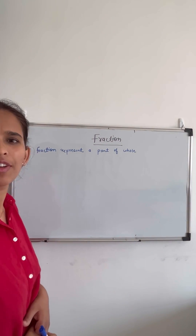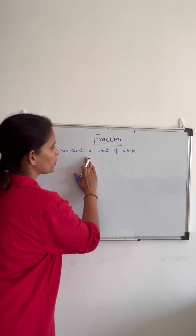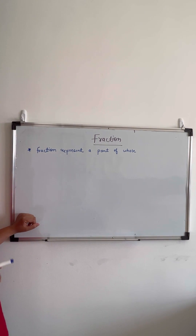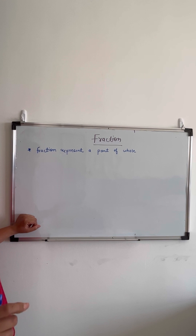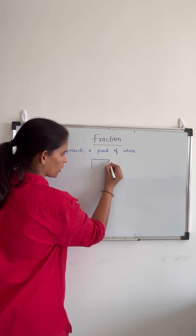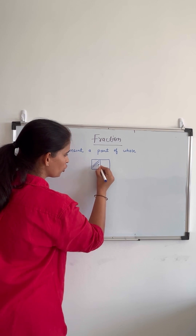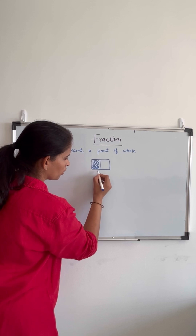Hello everyone, today we will learn about fractions. What is a fraction? A fraction represents a part of a whole, or we can say that when an object is divided into a number of equal parts, then a part of the object is represented by a fraction. For example, suppose I have this rectangle and I have divided it into two equal parts — the representation of this part is a fraction.